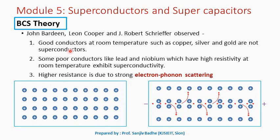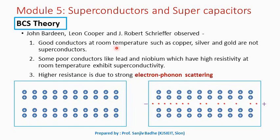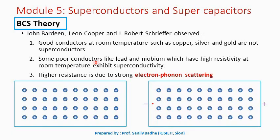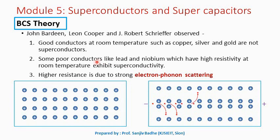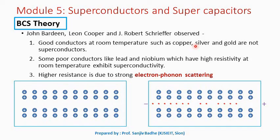To arrive at this statement, Bardeen, Cooper, and Schrieffer used some important observations. One observation was that very good conductors at room temperature — such as copper, silver, and gold — do not turn out to be superconductors even at very, very low temperatures. But some poor conductors like lead and niobium at room temperature may exhibit superconductivity when taken to very low temperatures.